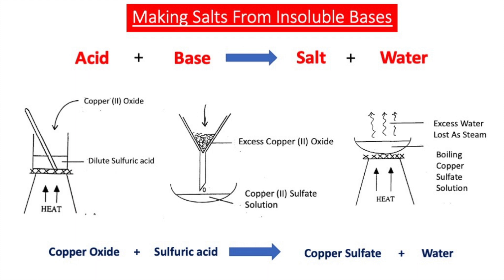To obtain crystals of the copper sulfate, we evaporated off around two-thirds of the water by heating the solution in an evaporating basin with a Bunsen burner, then left the remaining water to evaporate slowly on a windowsill over a few days — this enabled us to grow large crystals of copper sulfate. The equation for this reaction is: copper oxide plus sulfuric acid makes copper sulfate and water.